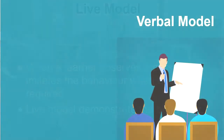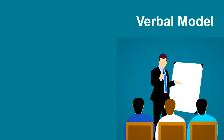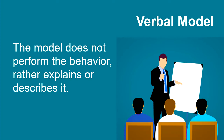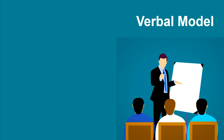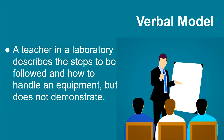In verbal modeling, the model does not perform the behavior but rather explains or describes its steps. For example, in a laboratory, instead of demonstrating an experiment, a teacher tells students only the steps they need to follow and describes how to handle equipment verbally without showing them. If a model is presented verbally — not live — and students learn, repeat, and imitate that behavior, it is called verbal modeling.